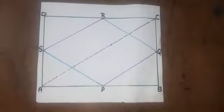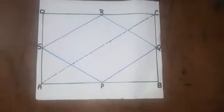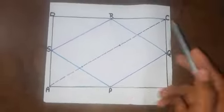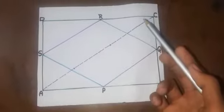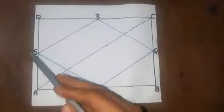By midpoint theorem we know that SR is parallel to AC and SR is half of AC. By midpoint theorem again we know that PQ is parallel to AC and PQ is half of AC. If we add these two equations we get that PQ is equal to SR.